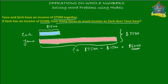If Zach is making one blue box equal to $1,500, and Yana is making one pink box equal to $6,000, then how many blue boxes will it take to make one pink box? That's what we have to find out — how many blue boxes can fit inside this one pink box. In other words, how many blue boxes will you need to make $6,000, if one blue box is equal to $1,500? So how many of $1,500 can we fit inside $6,000?